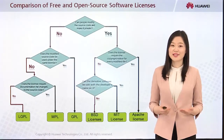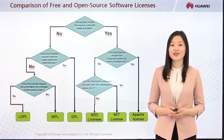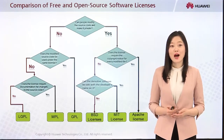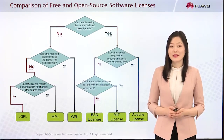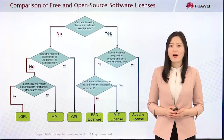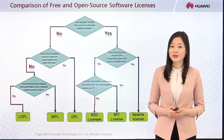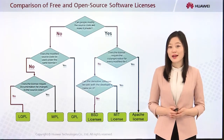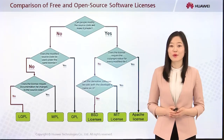We have learned that the core of free and open source software licenses is to share the source code, but how is it done? Is it okay to make the code private after modifying it, or to embed advertisements into the code? Can we charge for the open source software? Let's find out by learning about the free software license.